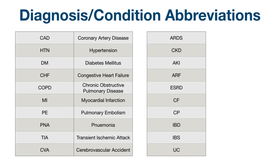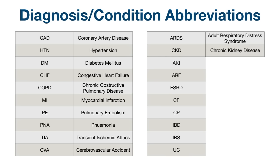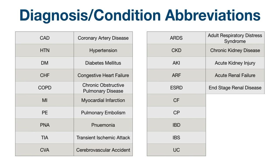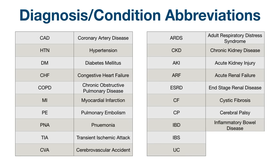CVA: cerebrovascular accident. ARDS: adult respiratory distress syndrome. CKD: chronic kidney disease. AKI: acute kidney injury. ARF: acute renal failure. ESRD: end-stage renal disease. CP: cerebral palsy. IBD: inflammatory bowel disease. IBS: irritable bowel syndrome. UC: ulcerative colitis.